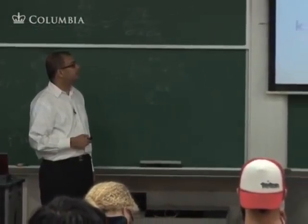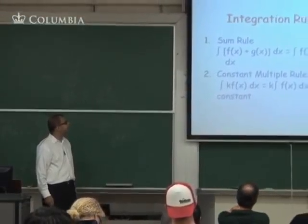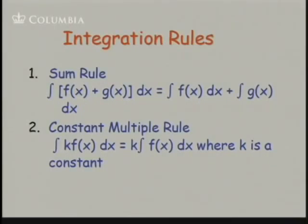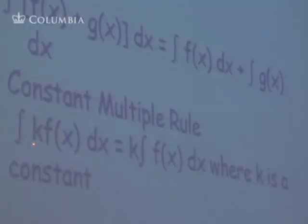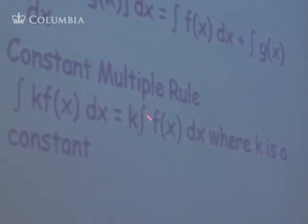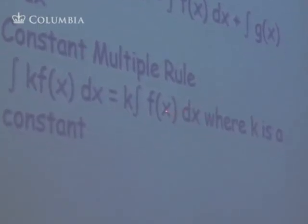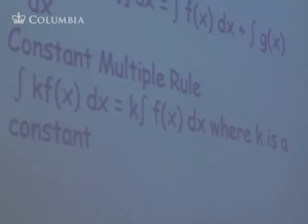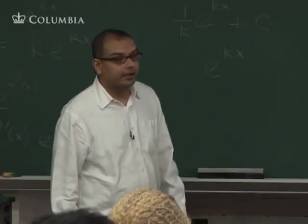k can't be 0 since division by 0 is not allowed. A couple of rules to keep in mind: the sum rule — the integral of a sum is just the sum of the integrals; and the constant multiple rule — the integral of a function times a constant k is just k times the integral of the function. In other words, you can take the k out of the integral sign.